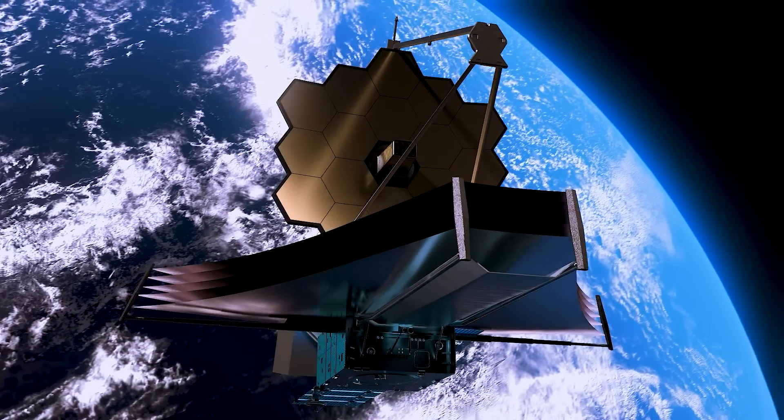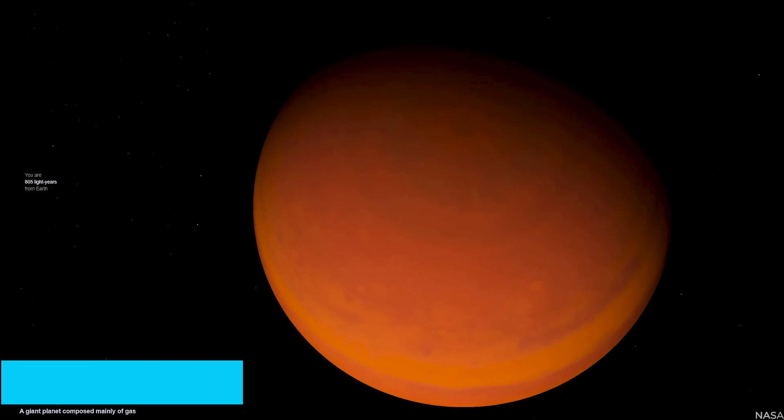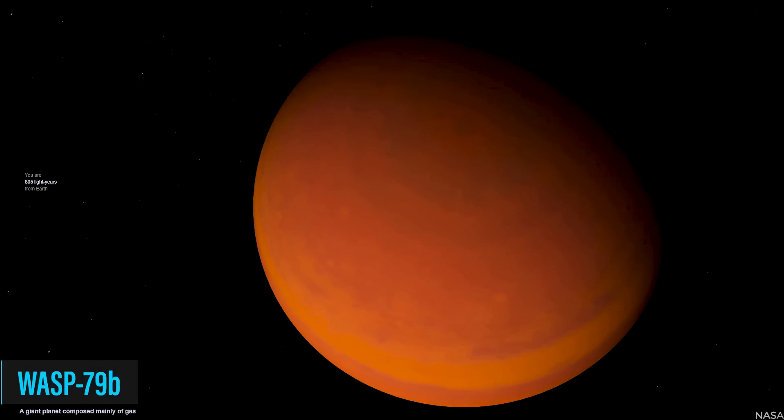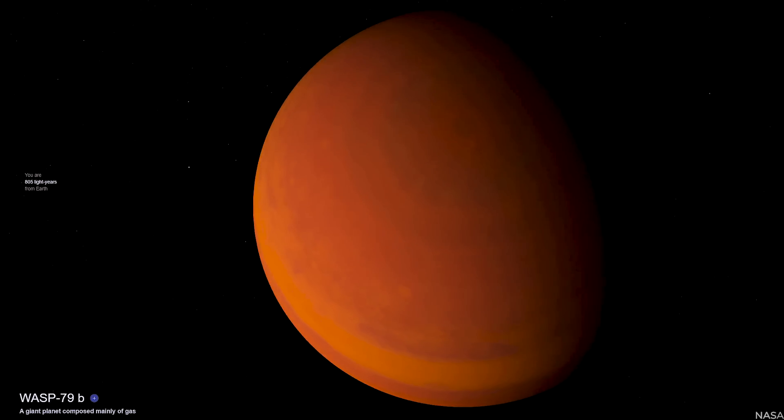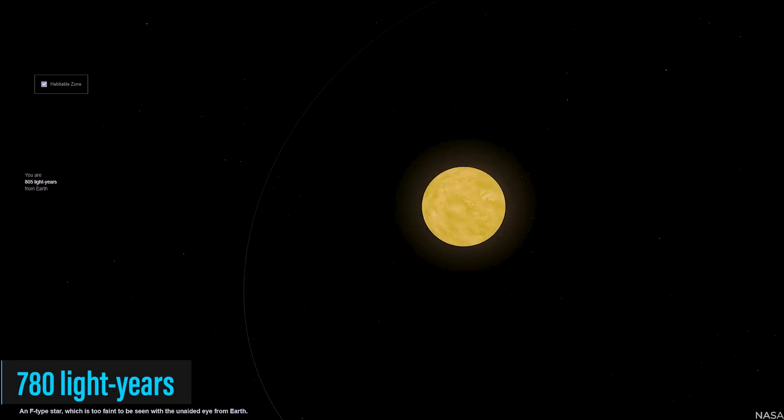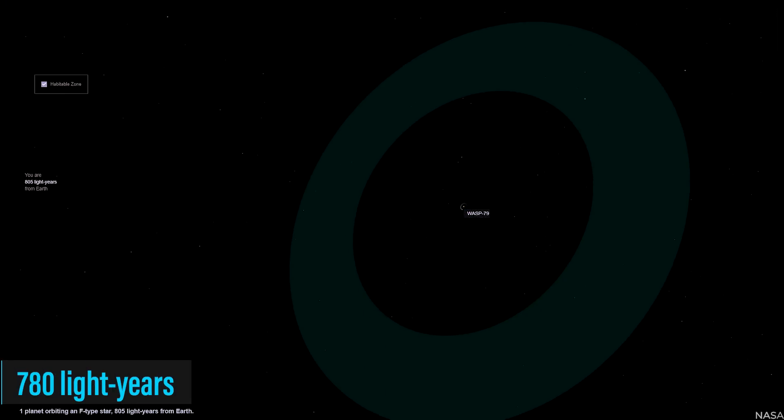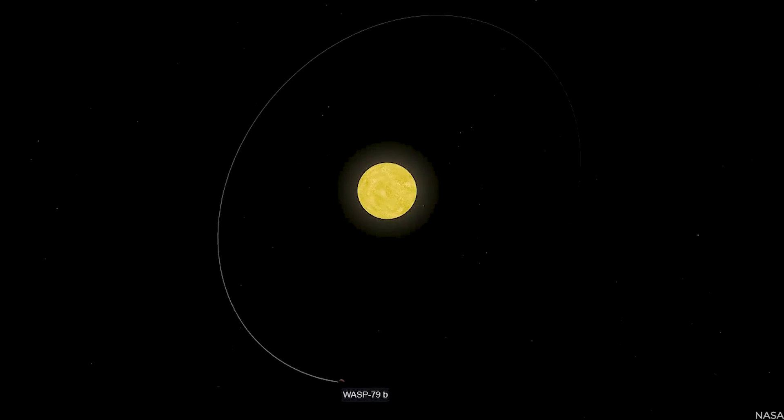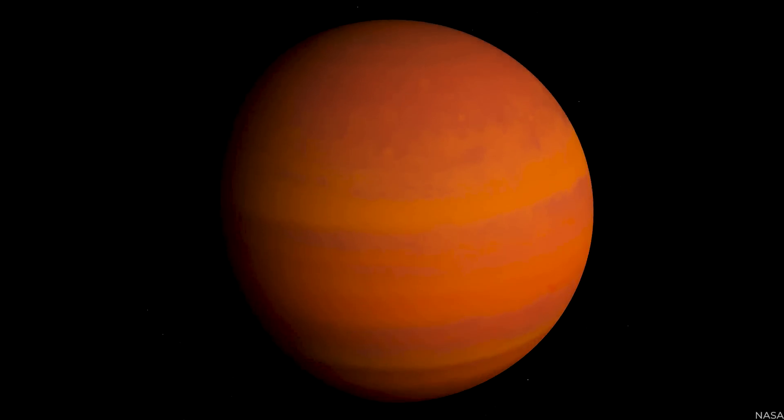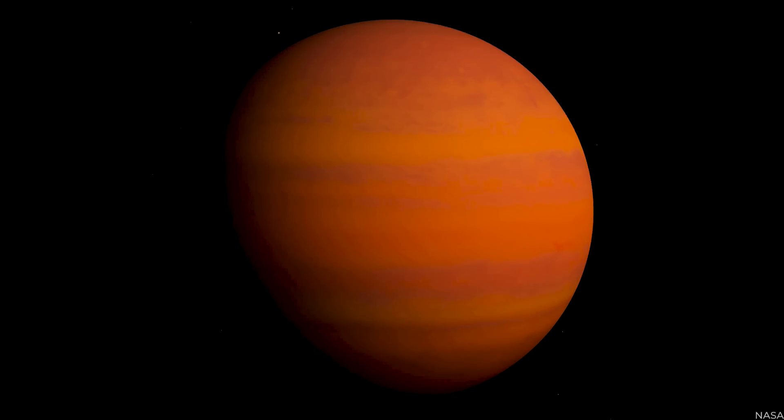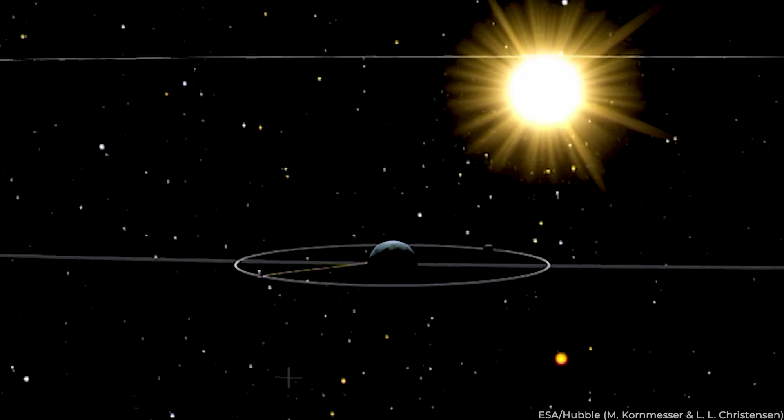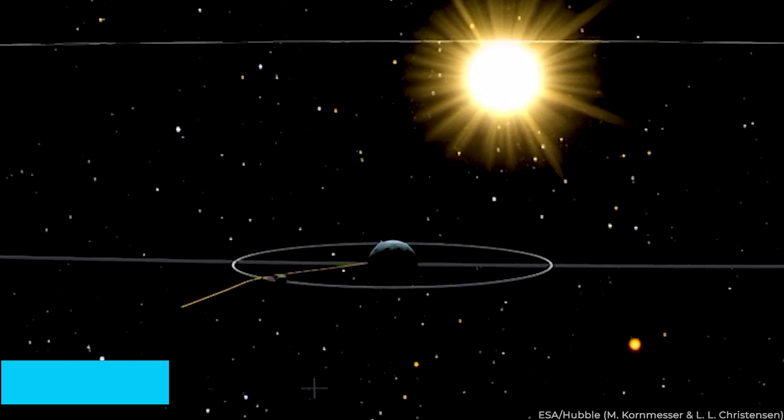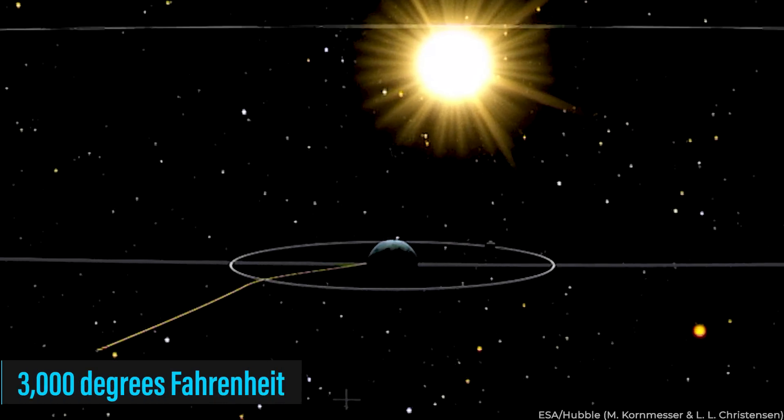Along with that, JWST recently showed us the first close-up look at WASP 79b. What's so special about that? Well, WASP 79b is an exoplanet that orbits a star about 780 light years away from us. So it's a clear picture of a planet outside our solar system. But the JWST doesn't take pretty pictures of planets, it's much more impressive than that. The JWST measures a bunch of things. The planet's size, mass, atmosphere, weather pattern, and even the temperature, which is a scorching 3000 degrees Fahrenheit.